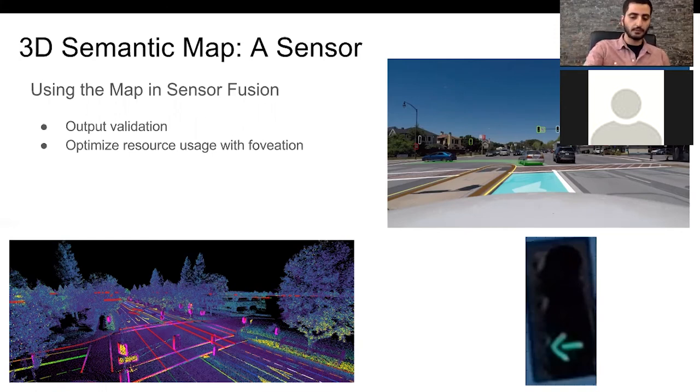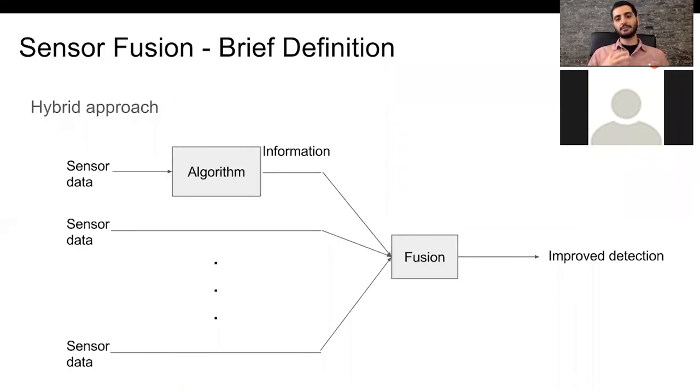Going back to the definition of sensor fusion, this is sort of a hybrid approach where, in the first case where we're validating our output, what we could be doing is feeding image data through an algorithm or a neural network that gives us the outlines of the signs, signals, the lane markings, etc.